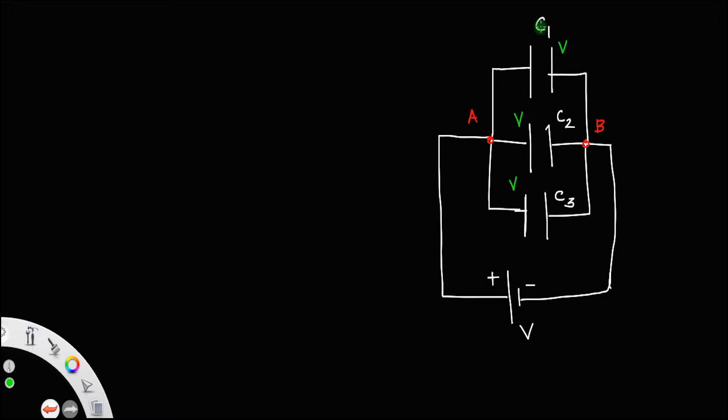Since capacitances are different and the potential remains the same, you have the equation Q charge is equal to CV. So, definitely the charges are different. So, this will be Q1, this will be Q2 and this will be Q3, charge across the first, second and third capacitors be Q1, Q2 and Q3.